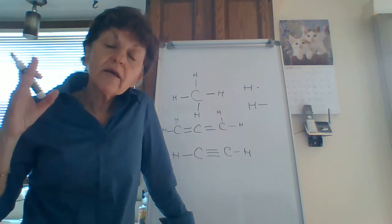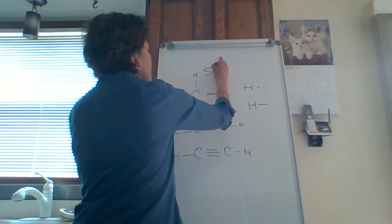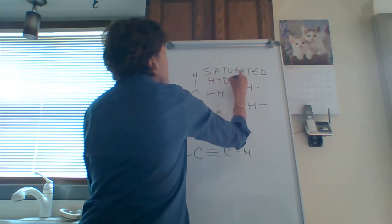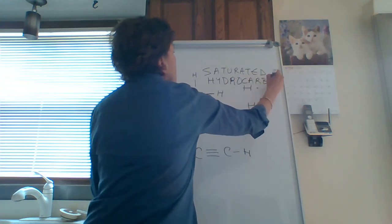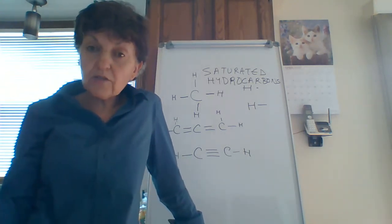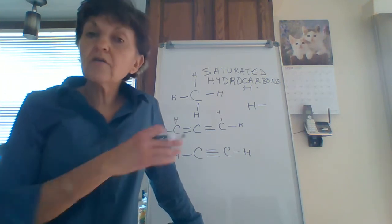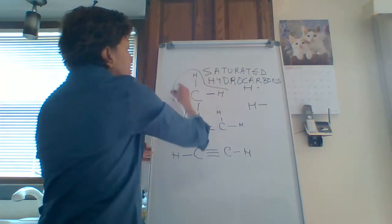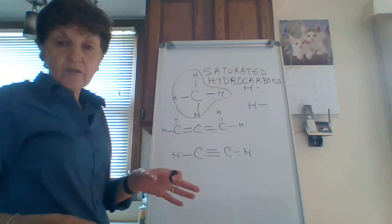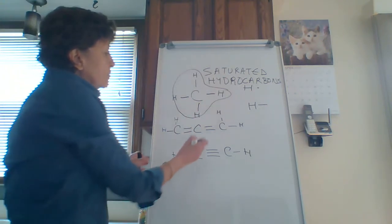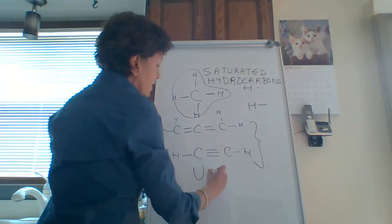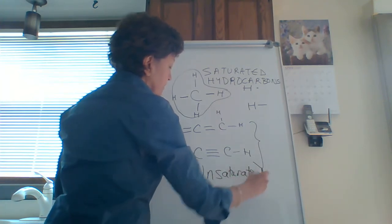What we're going to start doing in this chapter is something called saturated hydrocarbons. What's a saturated hydrocarbon? That's a hydrocarbon that's completely saturated with hydrogens — there are no double bonds, no triple bonds, all single bonds. So this one over here would be an example of a saturated hydrocarbon. You can see over here that because you've got double bonds and triple bonds, these are called unsaturated hydrocarbons.